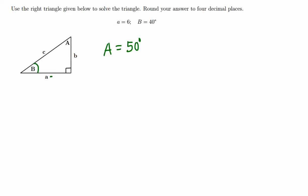Now side a is given as 6. We need to find b and c. Since a is given, let's make use of B and A. We know that tangent of angle B, tangent of B, is b over a.